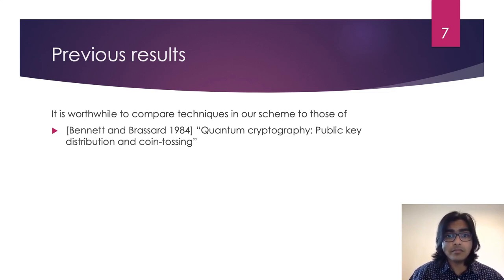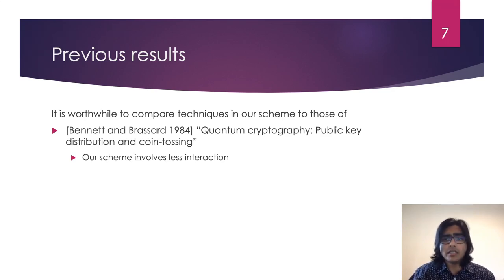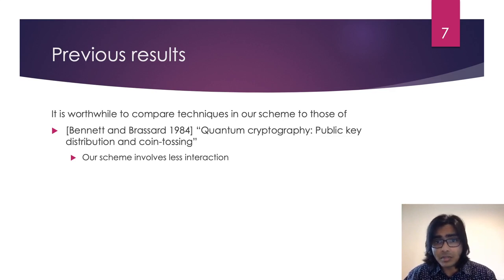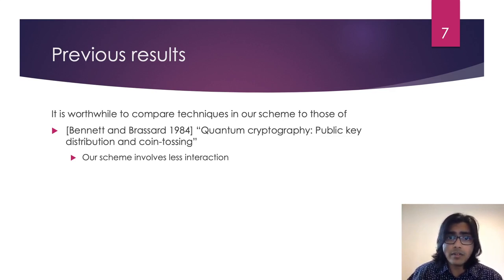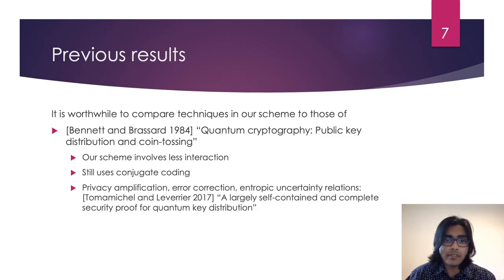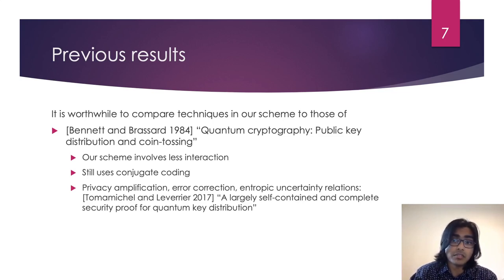In regard to the adversarial model in certified deletion, Alice is honest and Bob is cheating, while in QKD, Alice and Bob are honest while Eve plays the role of adversary. As pertains to the interaction model, certified deletion is almost non-interactive, while QKD involves multiple rounds of interaction between Alice and Bob. Nonetheless, our work involves conjugate coding just like BB84, and the privacy amplification, error correction, and entropic uncertainty relations we use are similar to those discussed in Tomamichel and Renner's treatments of BB84.